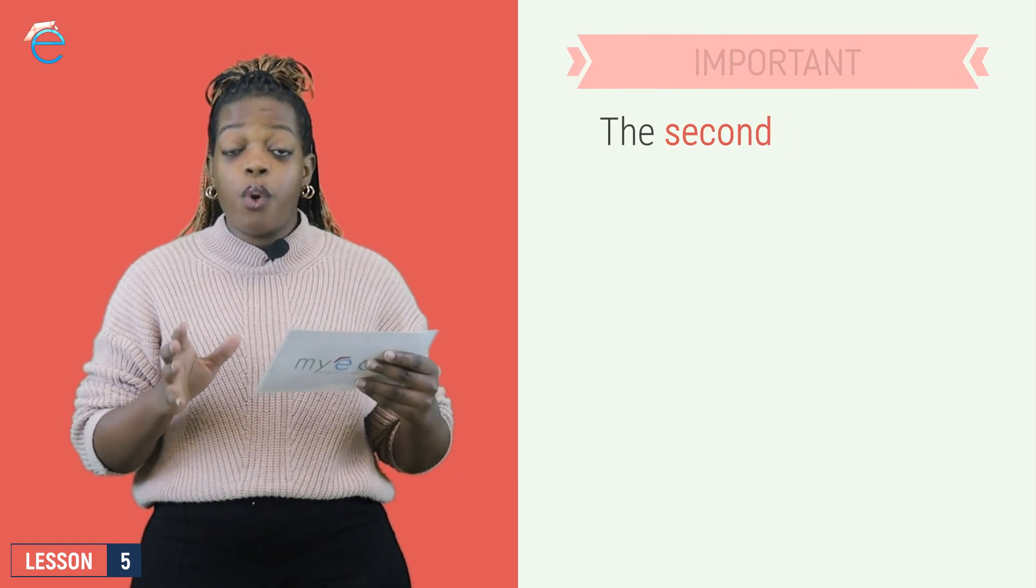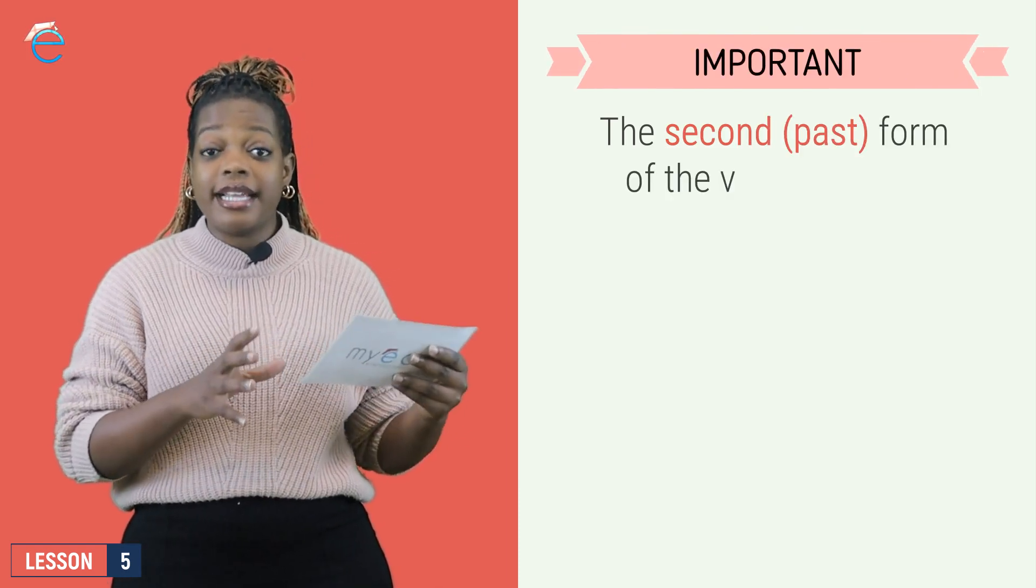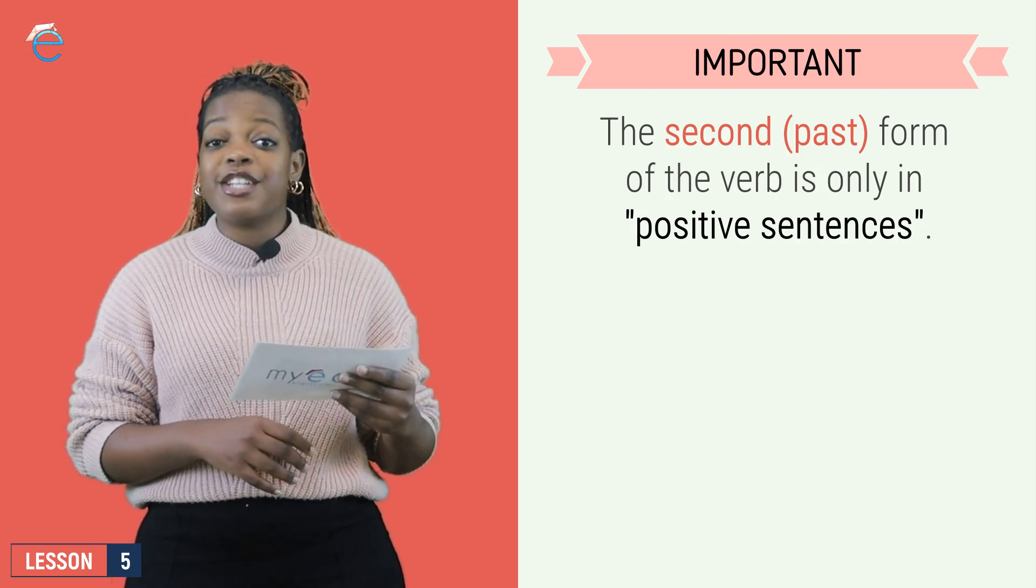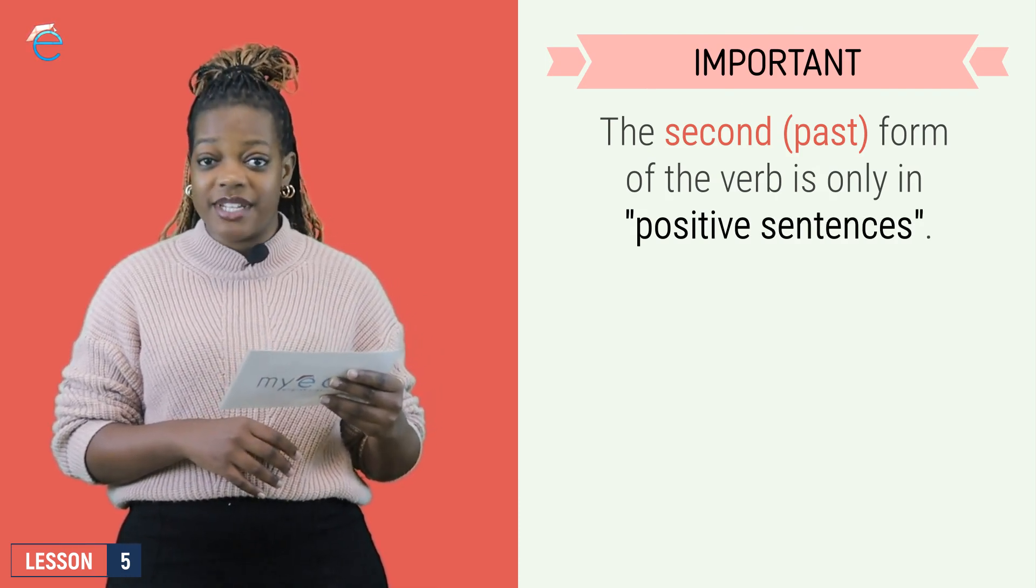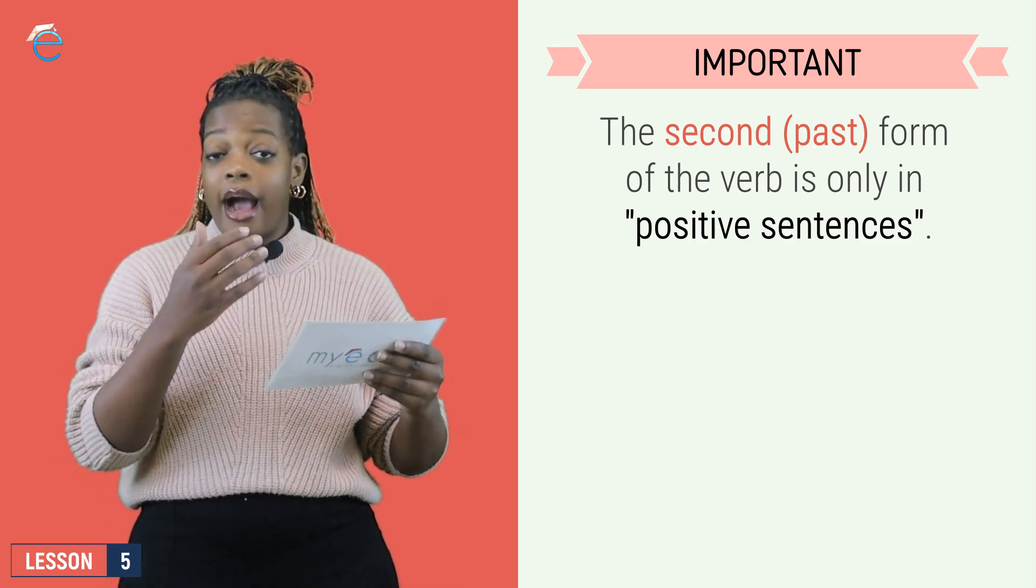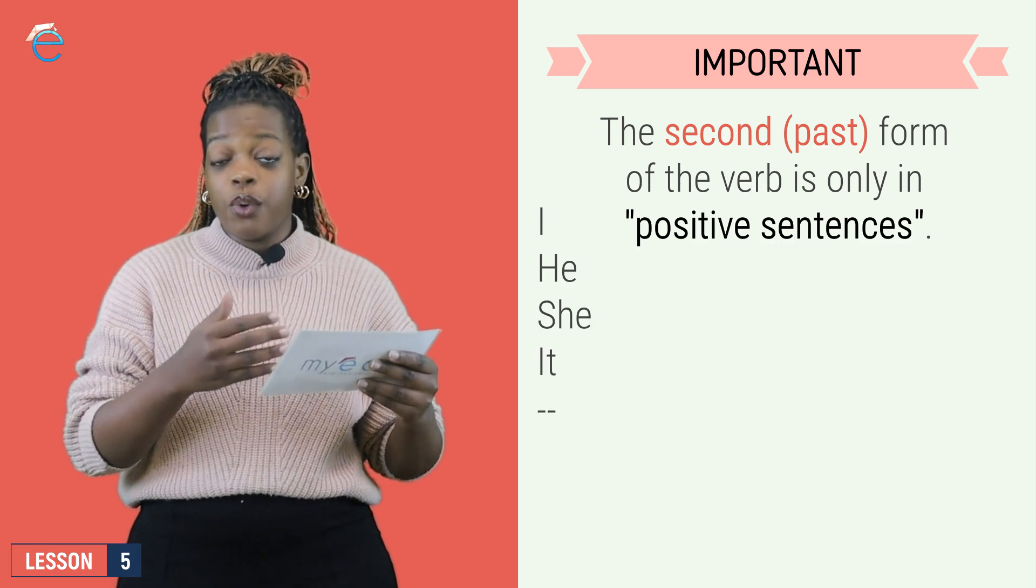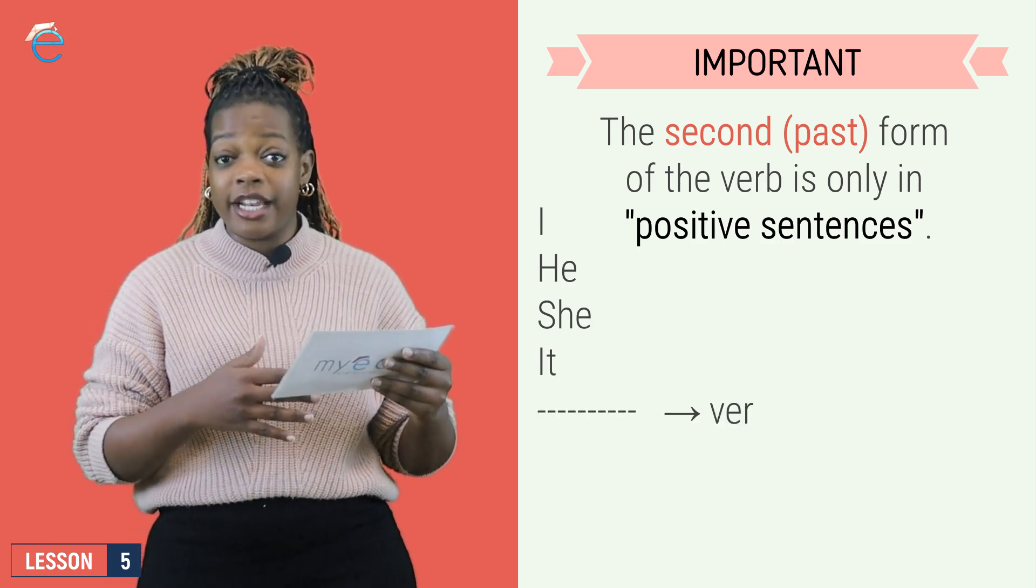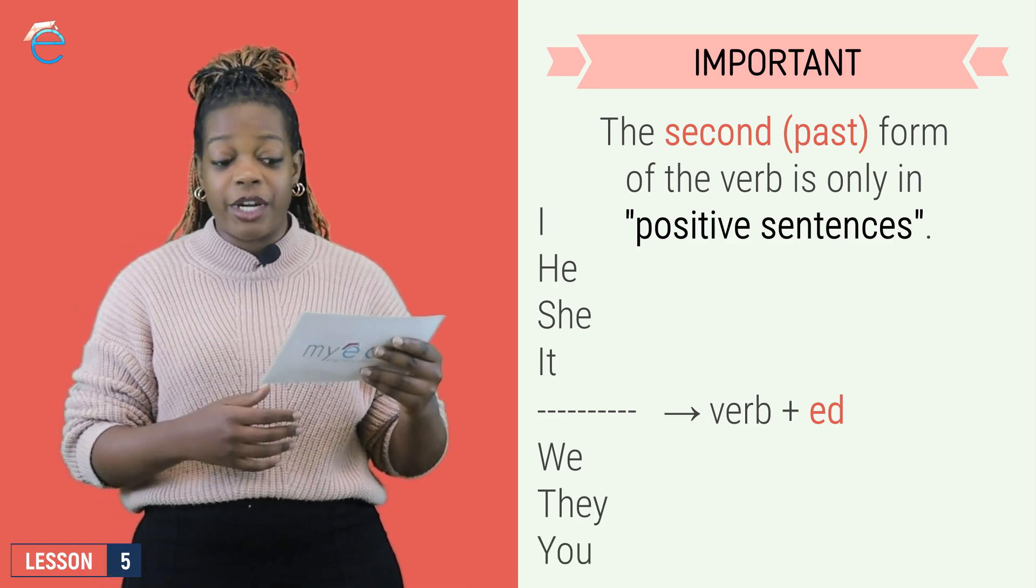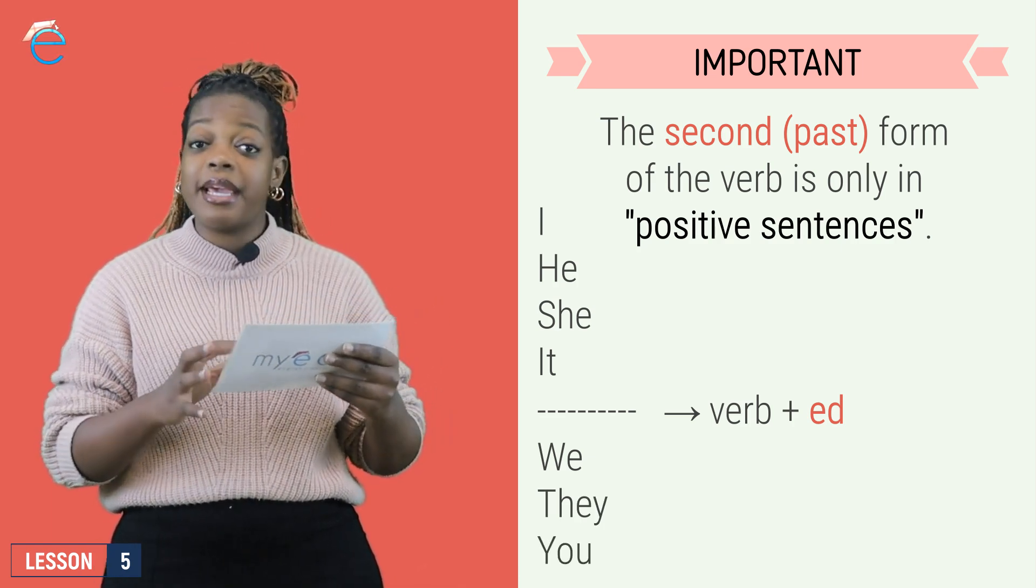Remember, we know that the second form, the past tense of a verb, is only in positive sentences. So, that means our structure is I, you, he, she, it, we, you, they, our subject, plus verb ED.